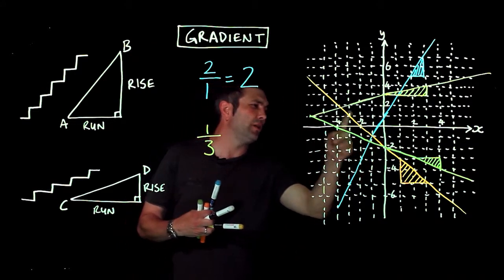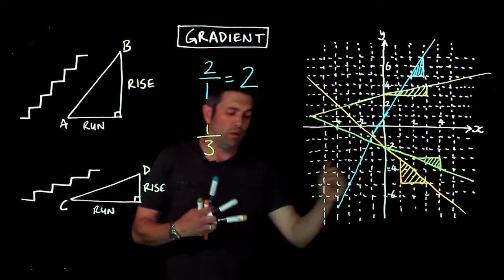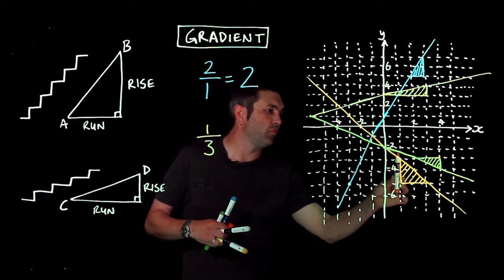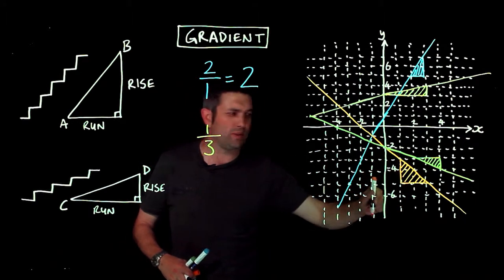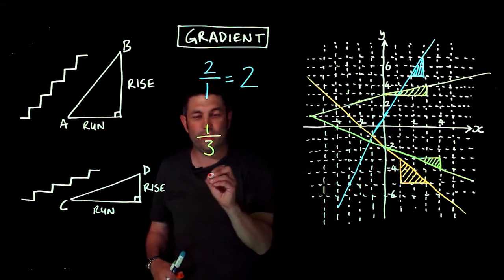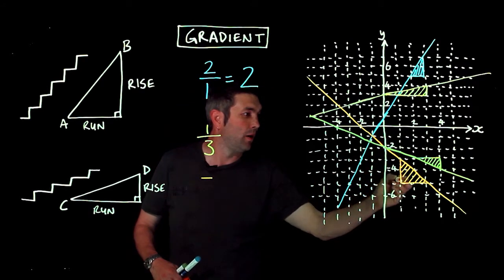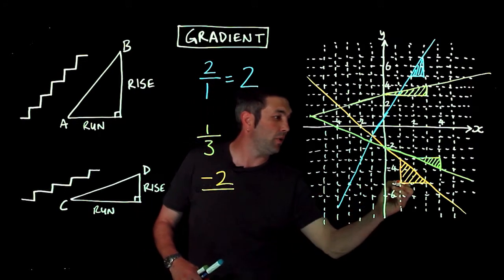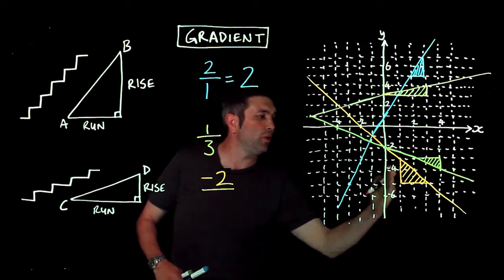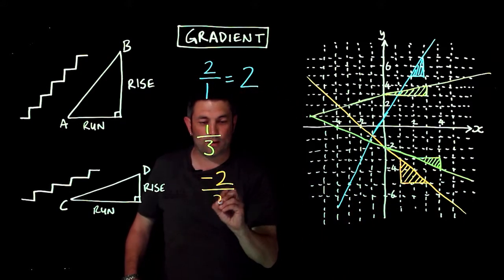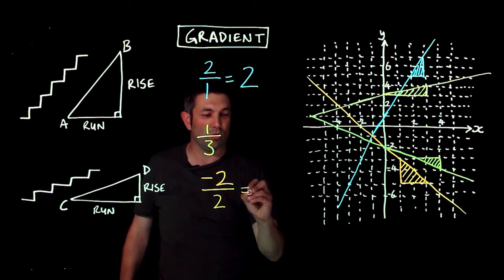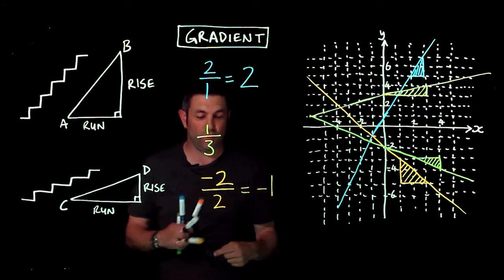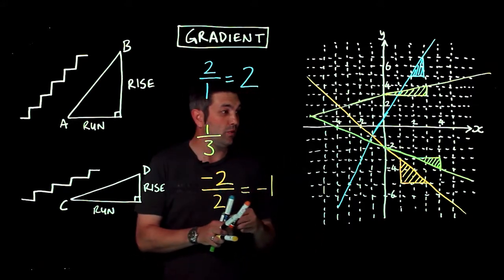Now the orange line is a little different — the rise is actually a drop, but we still call it the rise; it's just a negative rise. Counting down, it goes down two, so that's negative two. Dividing by the run of two — and notice I'm always going to the right — negative two divided by two gives a gradient of negative one for the orange line.